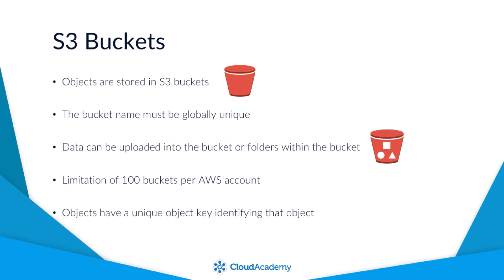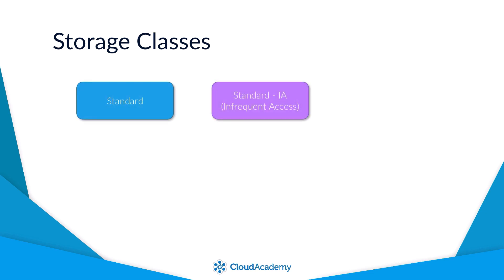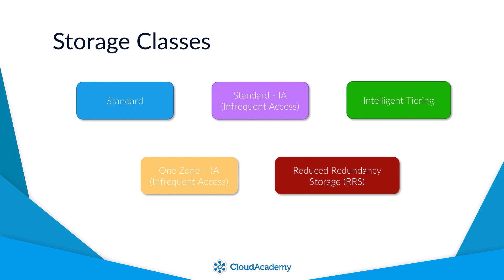Let's now take a closer look at some of the features offered by Amazon S3, starting with an overview of the different storage classes available. There are a number of different storage classes within S3, all offering different performance features and costs, and it's down to you to select the appropriate class. These classes are: Standard, Standard Infrequent Access, Intelligent Tiering, One Zone Infrequent Access, and Reduced Redundancy — though Reduced Redundancy is no longer recommended by AWS.